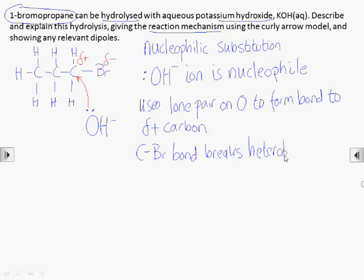As this bond forms, the carbon to bromine bond breaks heterolithically with bonding electrons both going to the bromine atom to form a bromide ion. We show this bond breaking with a second curly arrow.